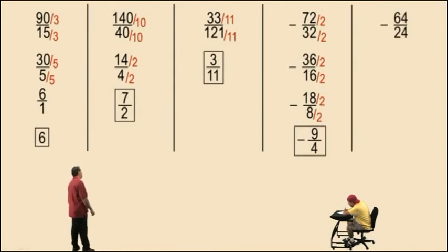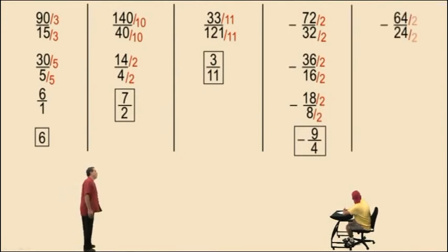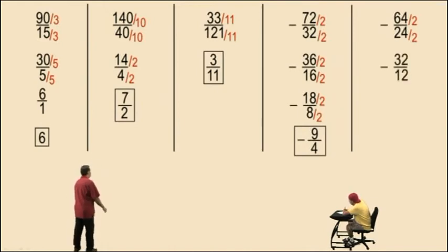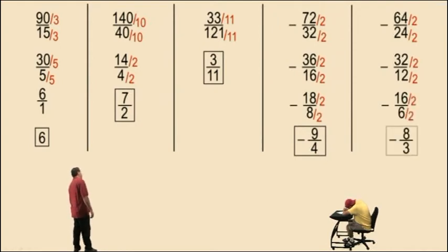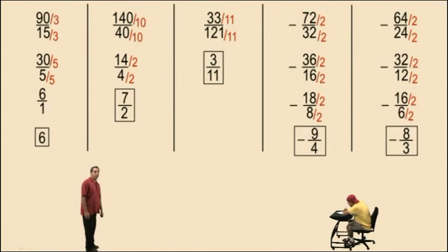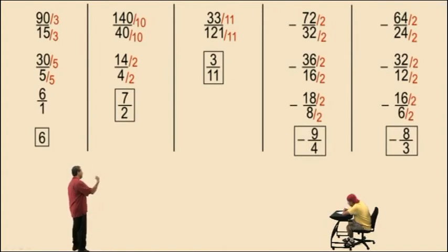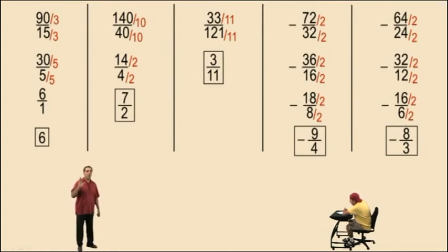Let's try this one: 64 and 24. Let's divide by 2 — we get 32 over 12. Don't forget about the negative sign. Again they're even, so divide by 2: we get 16 over 6, and again it's negative. Again they're even, so divide by 2: that gives us negative 8 over 3, and that is our final answer. Notice we divided by 2 three times — 2 times 2 times 2 is 8 — meaning you could have done the problem in one step by dividing by 8.